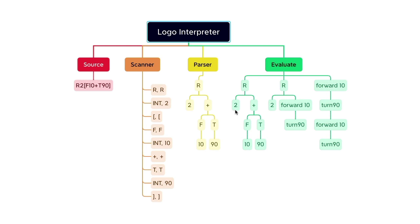When we start to evaluate this, we first evaluate the left subtree, which is the leaf 2 - that evaluates to 2. The right subtree is exactly the same as in the previous example, and we know that it evaluates to forward 10 turn 90. And when we evaluate this tree, it evaluates to 2 times the right subtree, which is forward 10 turn 90 forward 10 turn 90, and that is what we return.